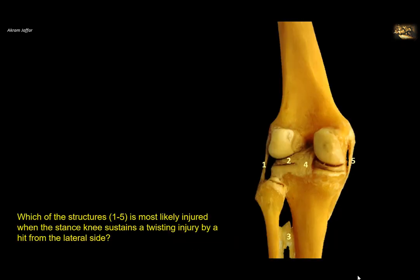Which of the structures 1 to 5 is most likely injured when the stance knee sustains a twisting injury by a hit from the lateral side? Let's identify the ligaments. Structure 1 is on the lateral side — this is the fibula — so it is the lateral collateral ligament, or lateral fibular ligament, extending between the femur and the head of the fibula. Structure 2 is the lateral meniscus, the fibrocartilage present in the knee joint.